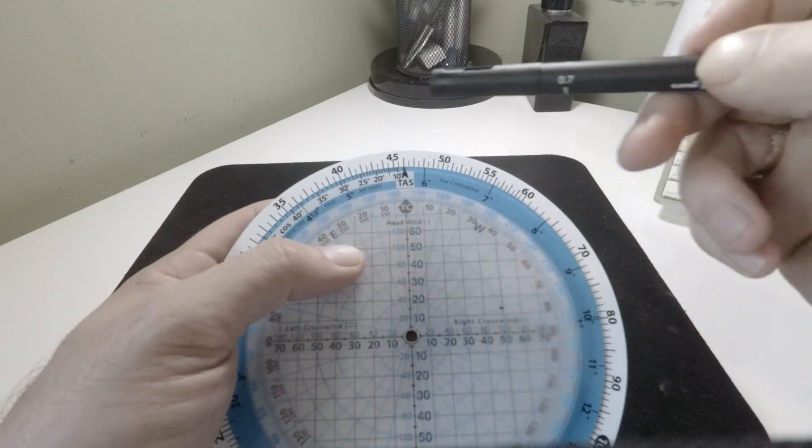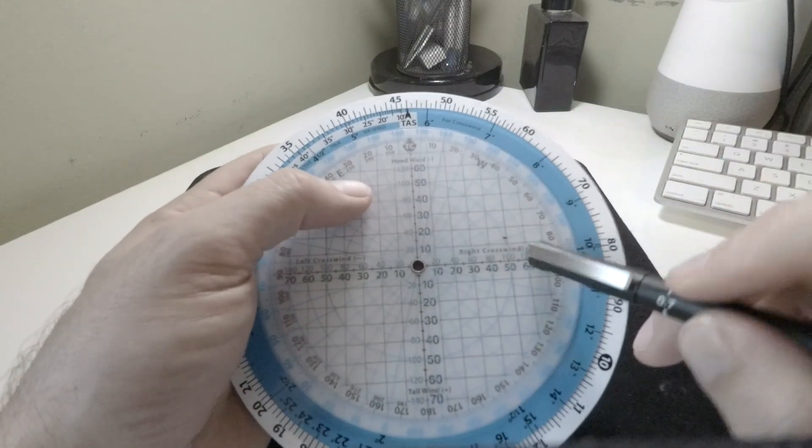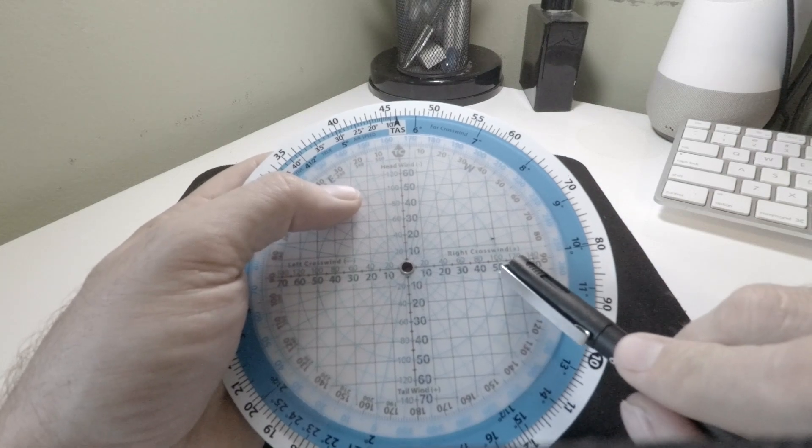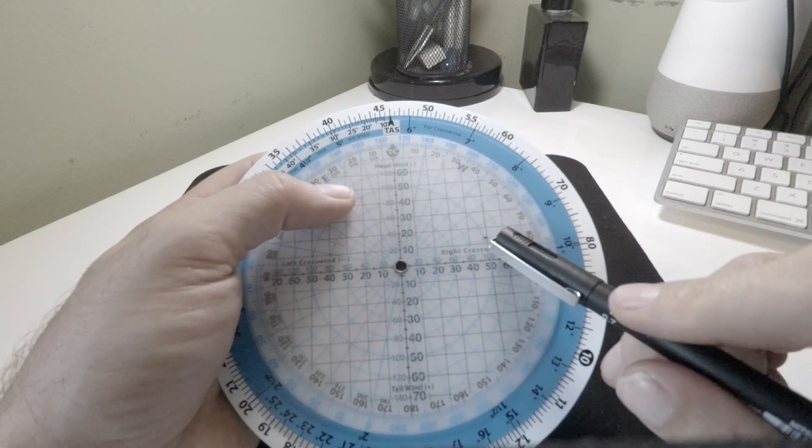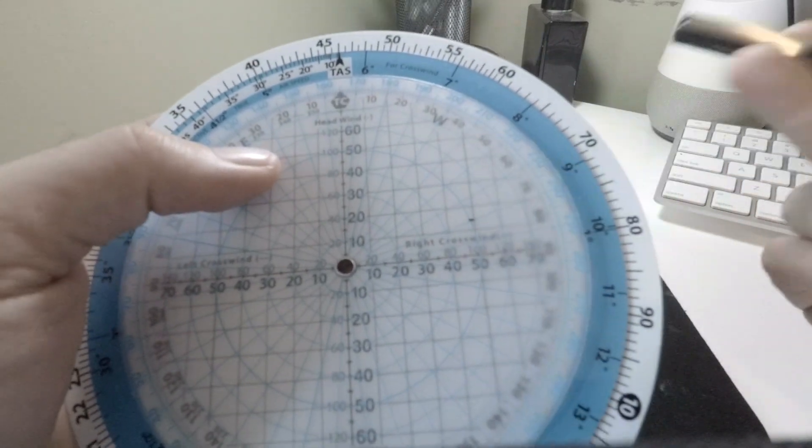Okay, so 460 TAS, 240 at 100, our track is 165. We've got about 97 knots worth of crosswind and about 24 knots worth of headwind, so it's pretty significant. I'm sure you can see that there.